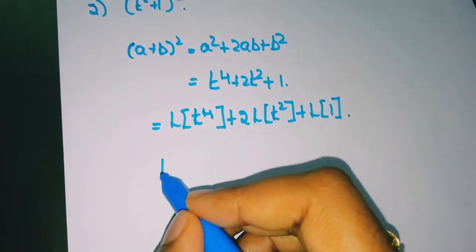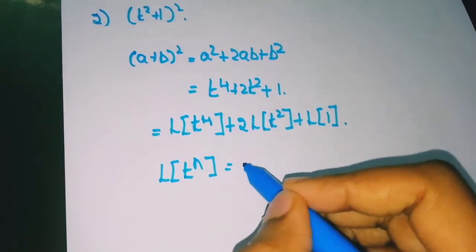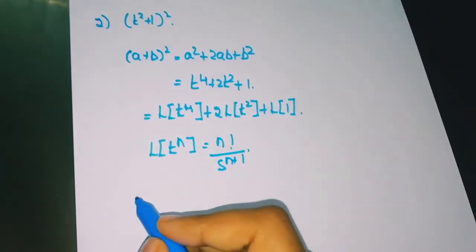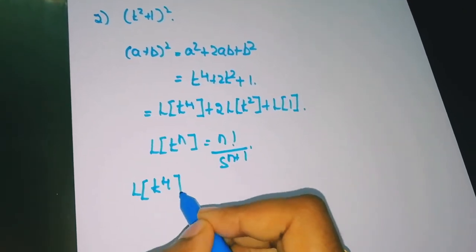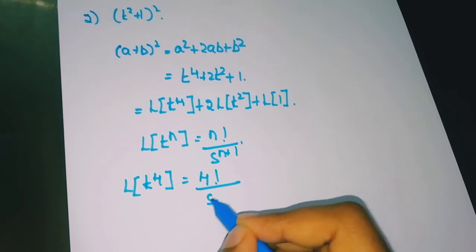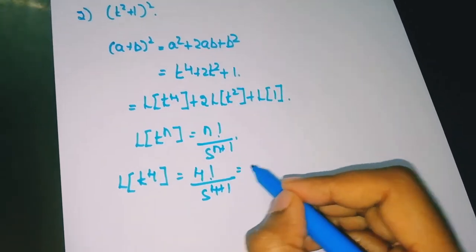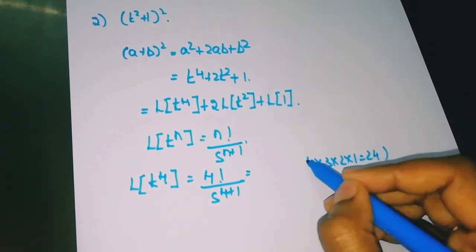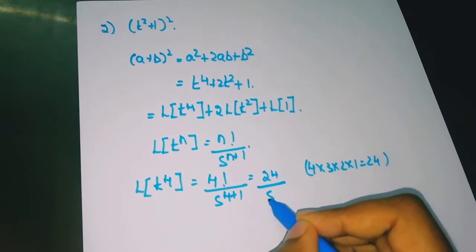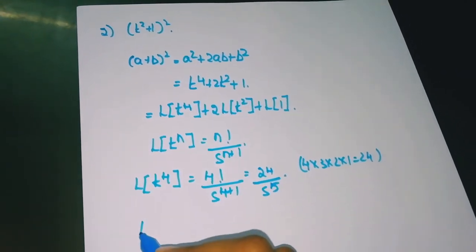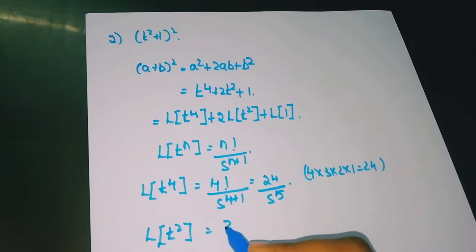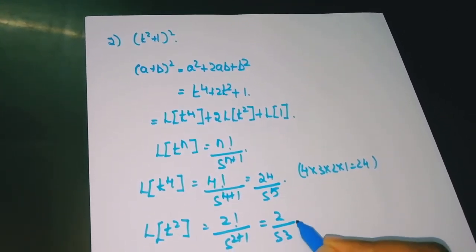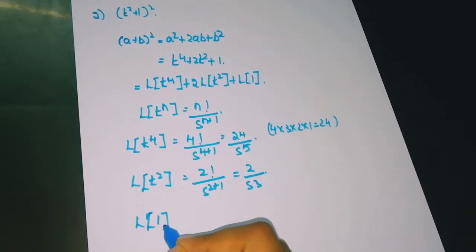We know that Laplace of t^n is n!/(s^(n+1)). So Laplace of t⁴ is 4!/s⁵ = 24/s⁵. Laplace of t² is 2!/s³ = 2/s³. And Laplace of 1 is 1/s.